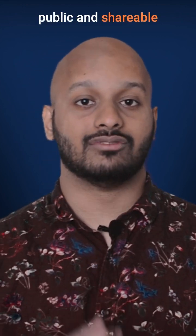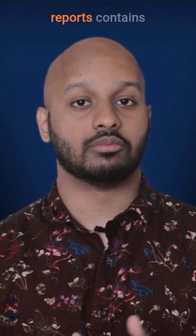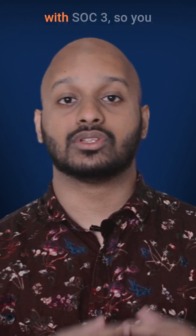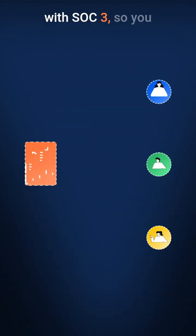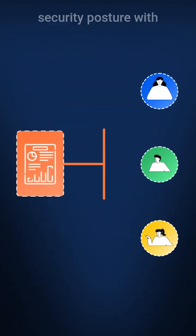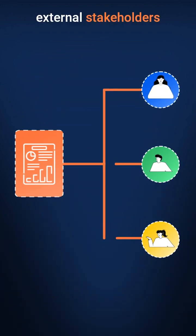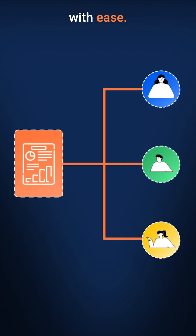SOC 3 is nothing but a public and shareable version of your SOC 2. Since your SOC 2 reports contain sensitive information, the AICPA came up with SOC 3 so you could share your security posture with external stakeholders with ease.